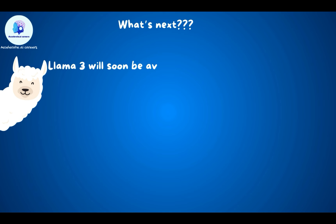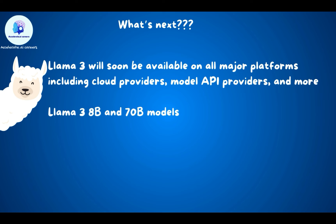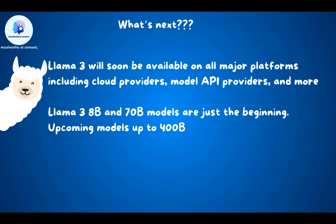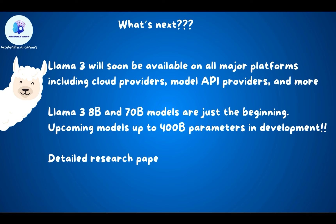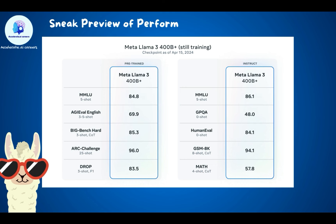What's next? LAMA 3 will soon be available on all major platforms including cloud providers and model API providers. The 8B and 70B models are just the beginning — models up to 400 billion parameters are currently in development, with a detailed research paper to be released once training is completed. A sneak peek of LAMA 3 400B+ (based on an April 15th checkpoint) shows promising performance metrics on MMLU, DROP, and math scores when compared to the current 70B model.